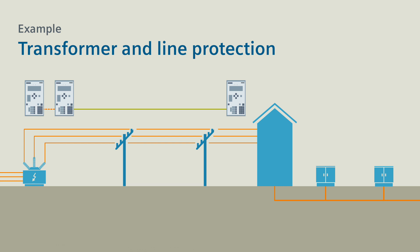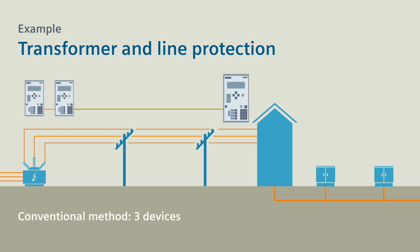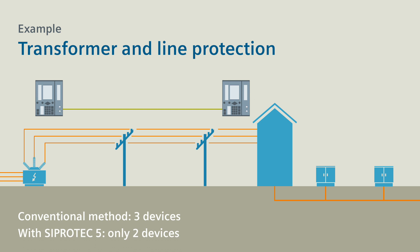Transformer and line protection. The conventional method requires one protection device for the transformer and one protection device each for the two line ends. CProtek 5 is clearly the more efficient choice: instead of three devices, you now only need two. Transformer protection and line differential protection communicate via the protection data interface for this solution.